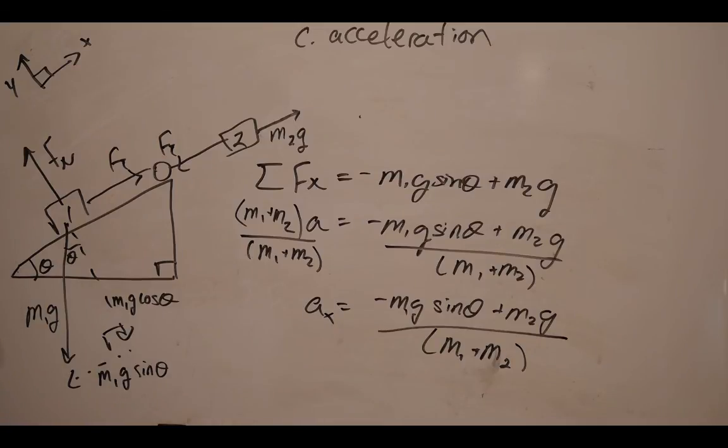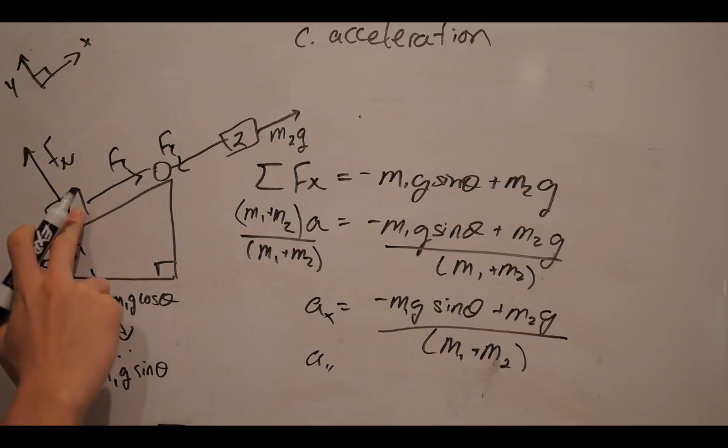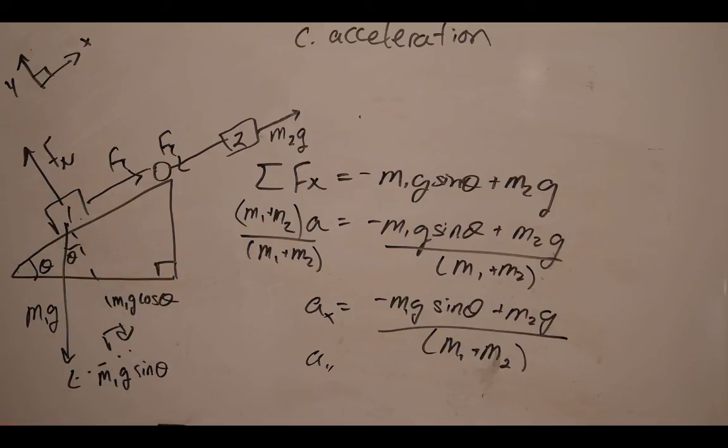Of course, we're in the x direction. Now, if you're wondering what the acceleration will be in the y direction, think about it. Remember, if object 1 jumps off the ramp or digs into the ramp, it will have the acceleration in the y axis. However, it does not do either of those, so our acceleration in the y direction is actually going to be 0 meters per second squared.